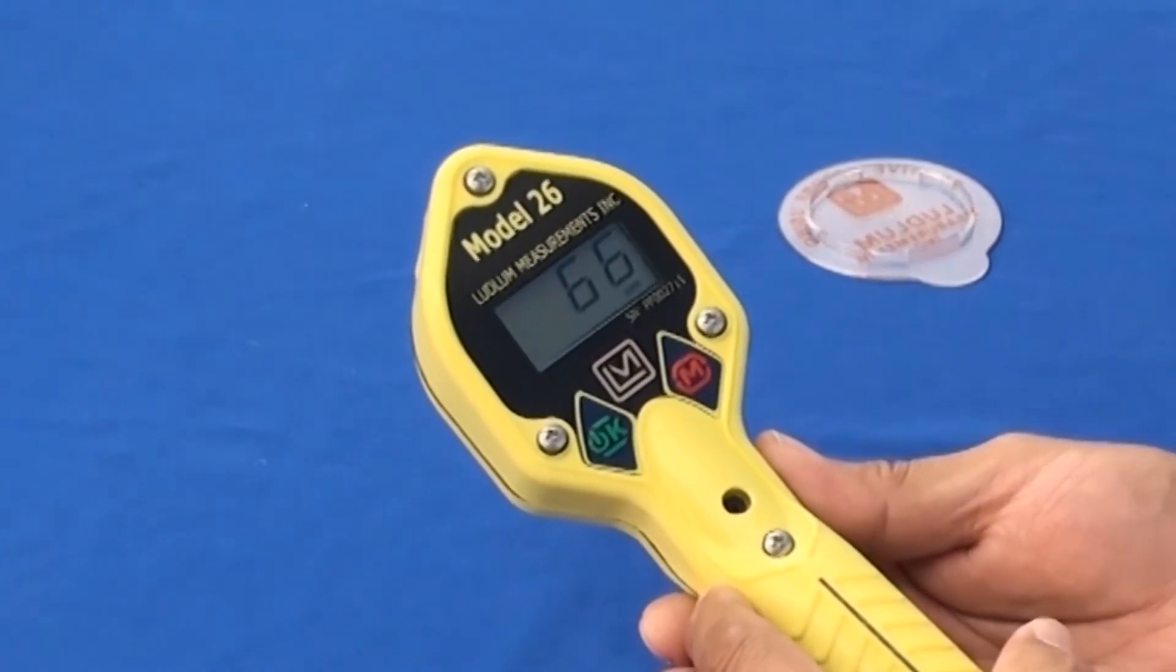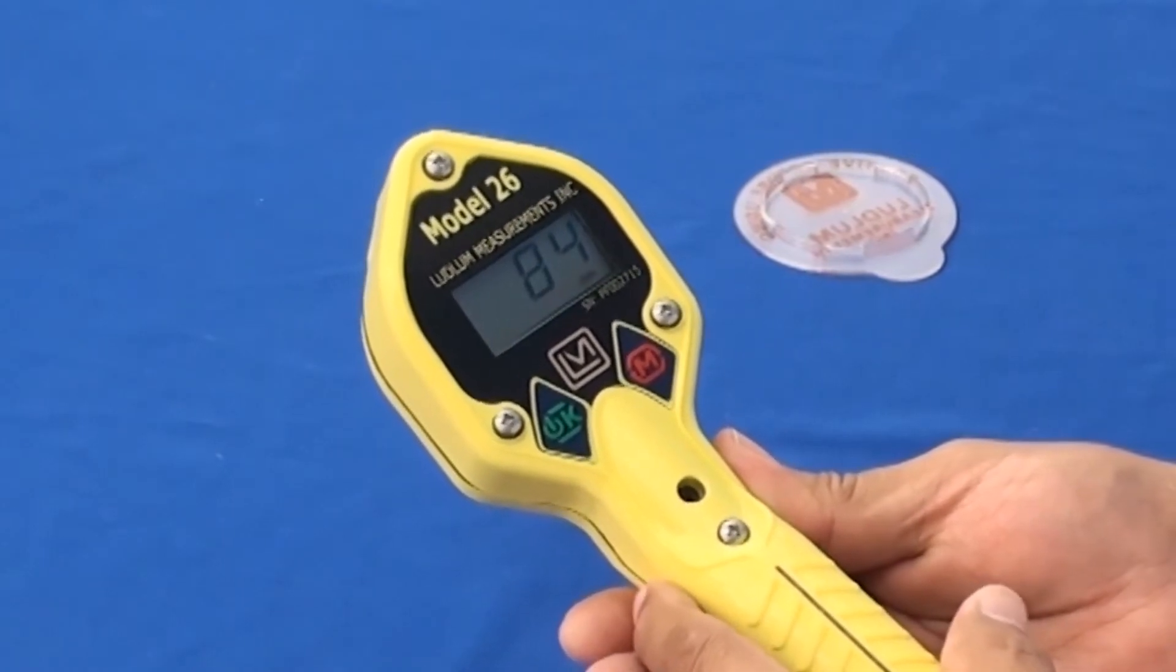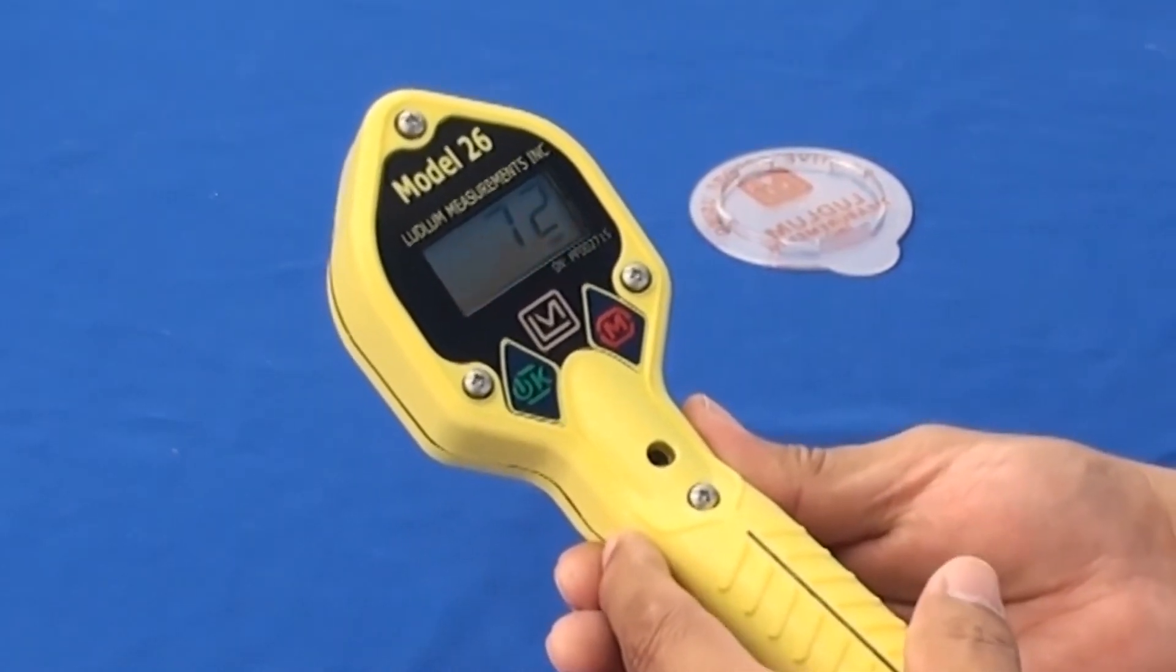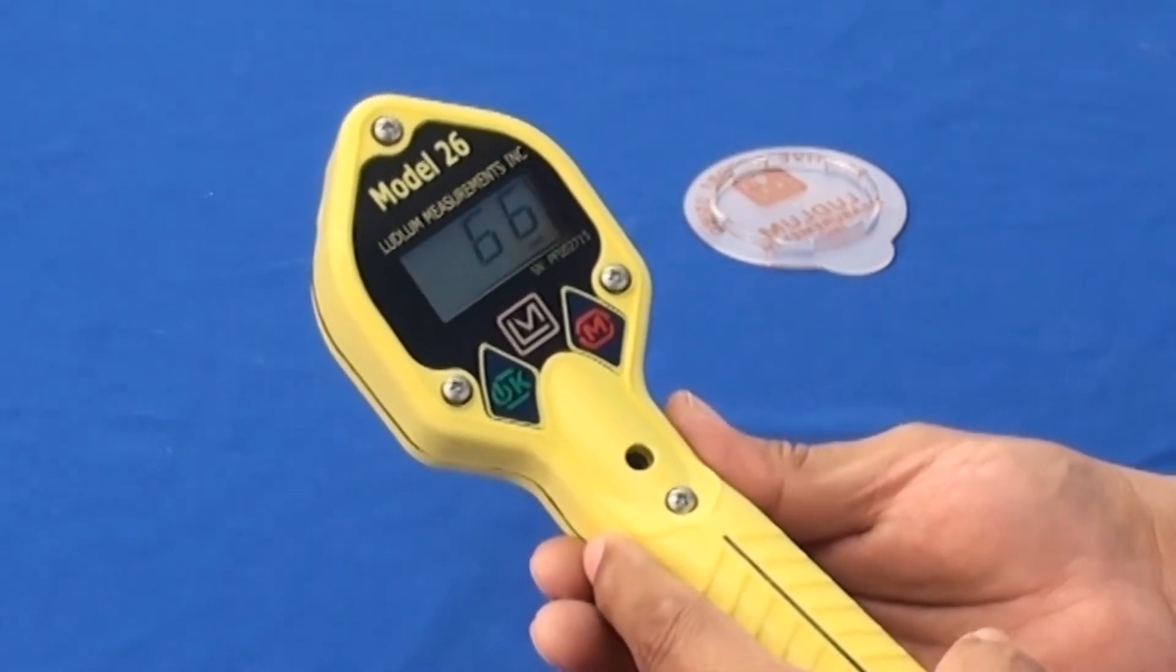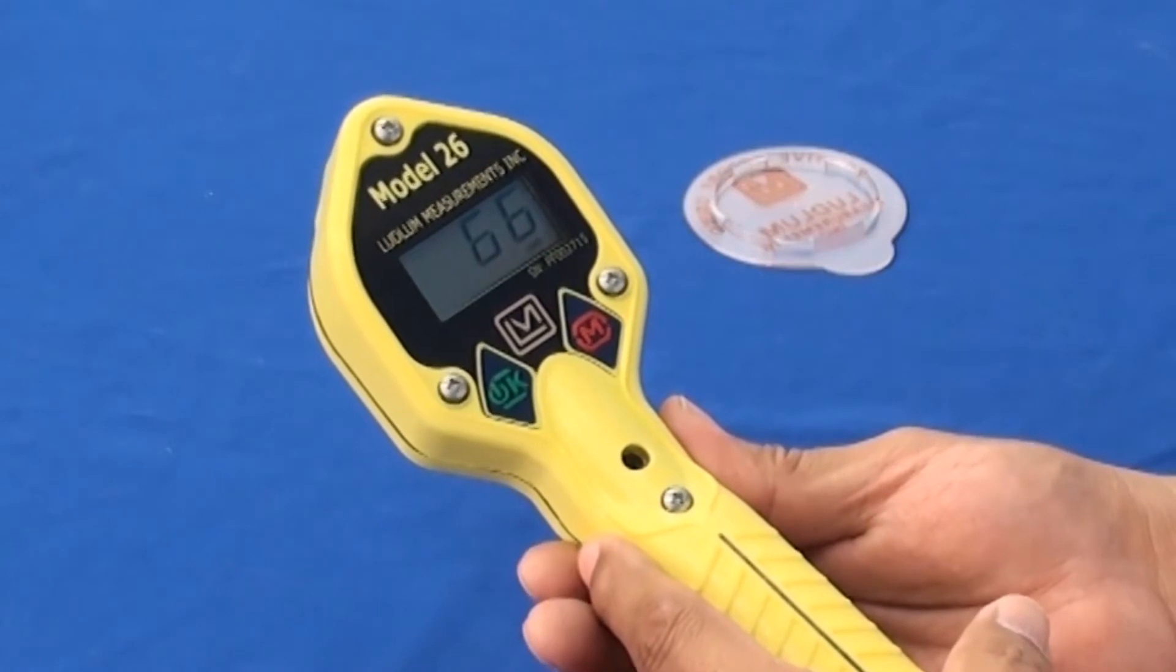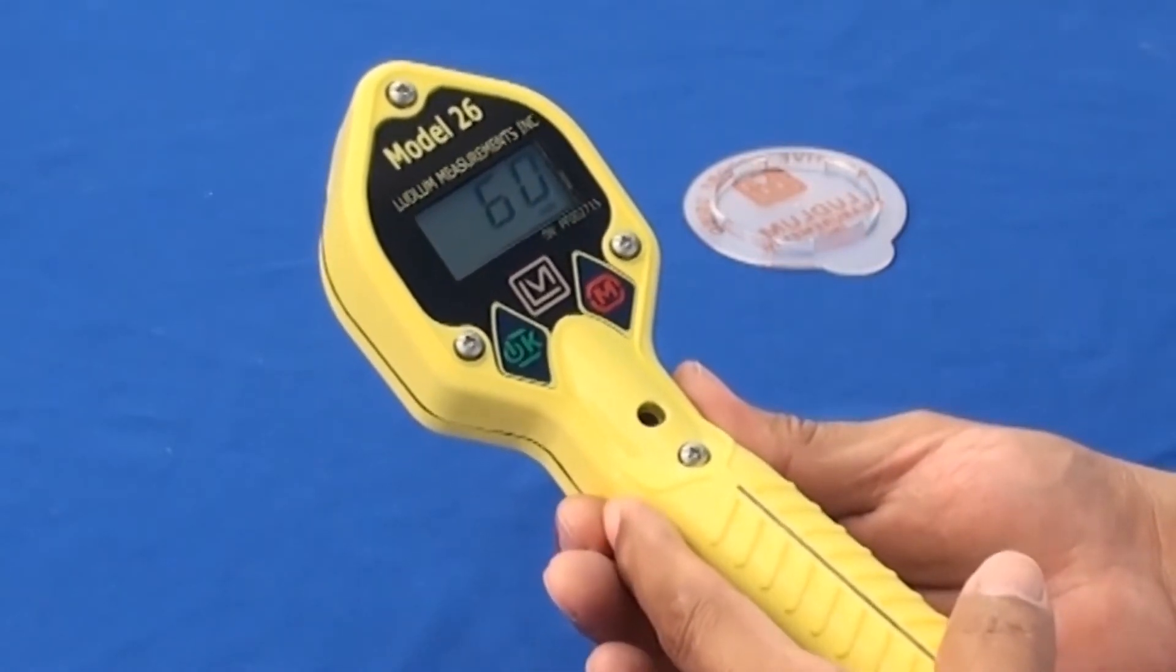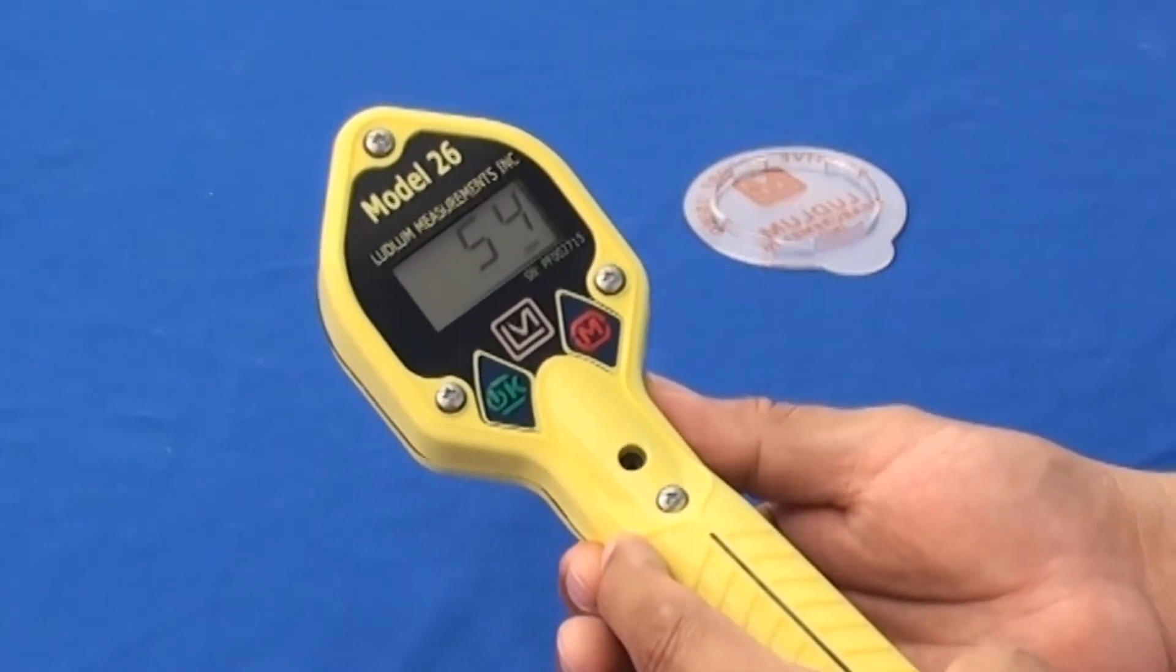That backlight can be set to stay on all the time. Refer to the user's manual which will show you how to properly disassemble the model 26 to access the two pole dip switch that's located on the main board alongside the pancake tube.